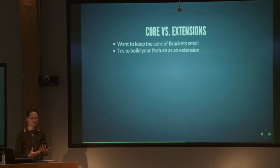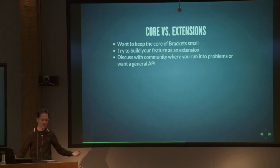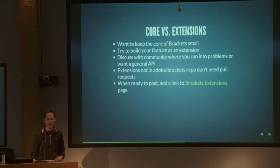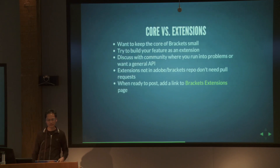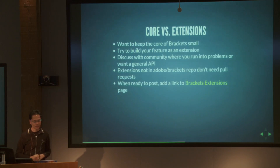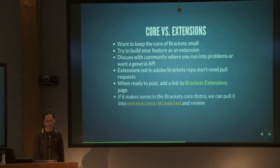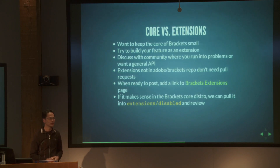If you do want to build something new, try to build it as an extension, then let the community know and have a discussion about where you run into problems and where you'd want a more general API. If you're just building it in your own repo, you don't need to submit a pull request to us. You can add a link to a page where we're keeping a list of extensions — we don't have a full mechanism for installing and discovering extensions yet, it's just people posting links. For functionality that makes sense to distribute with Brackets as part of the core distribution, we can pull it into our extensions folder.